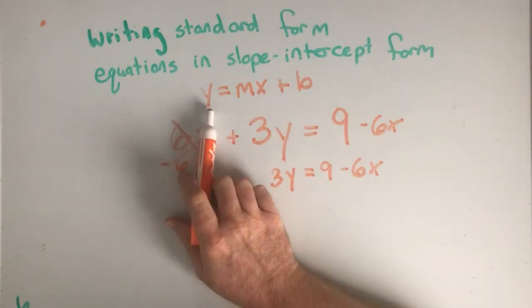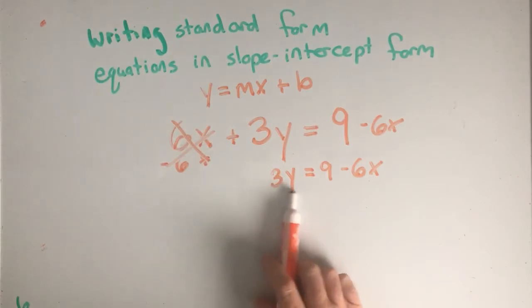Now I want to get the y by itself. Well, I have y here, but it's being multiplied by 3, so I have to do the opposite.